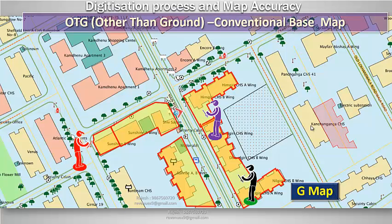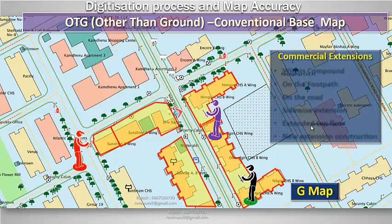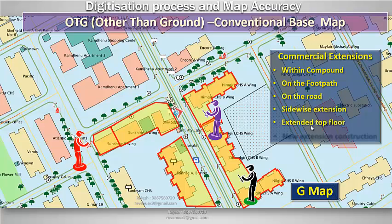The G map allows us to capture commercial deviations such as deviations within the compound, on the footpath, on the road, sidewise extension, extended top floor, and new extended construction.